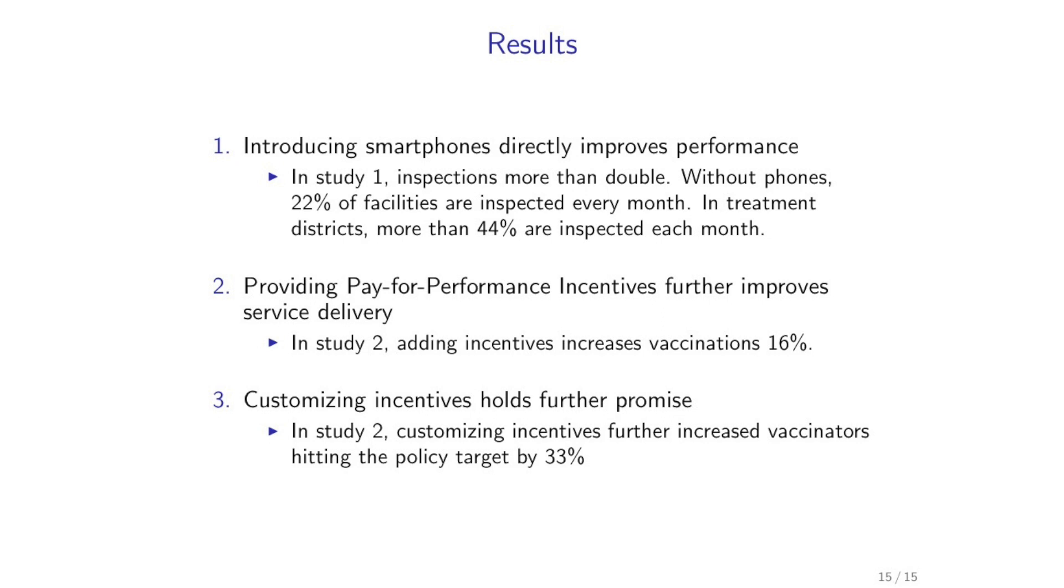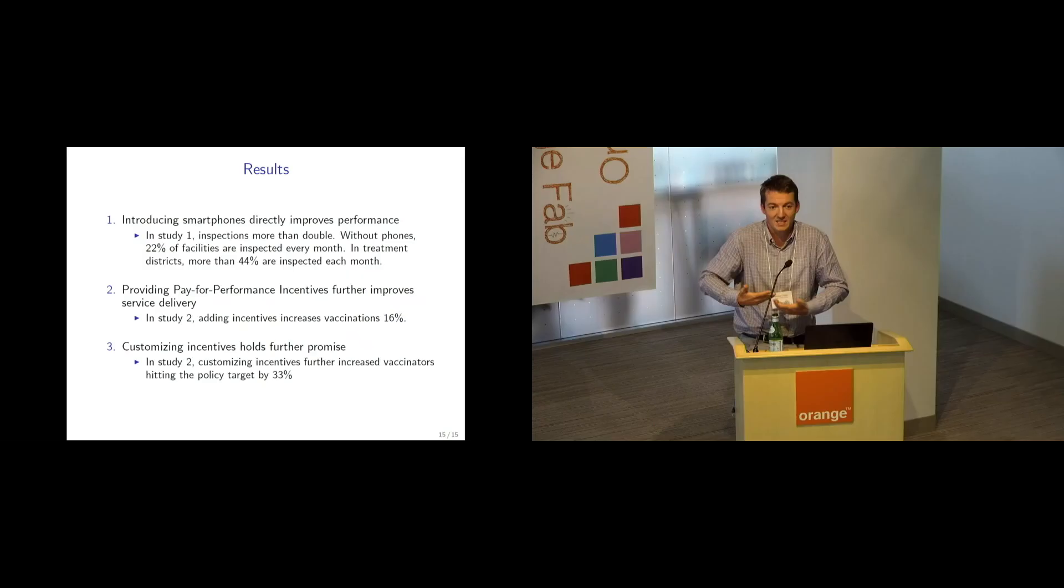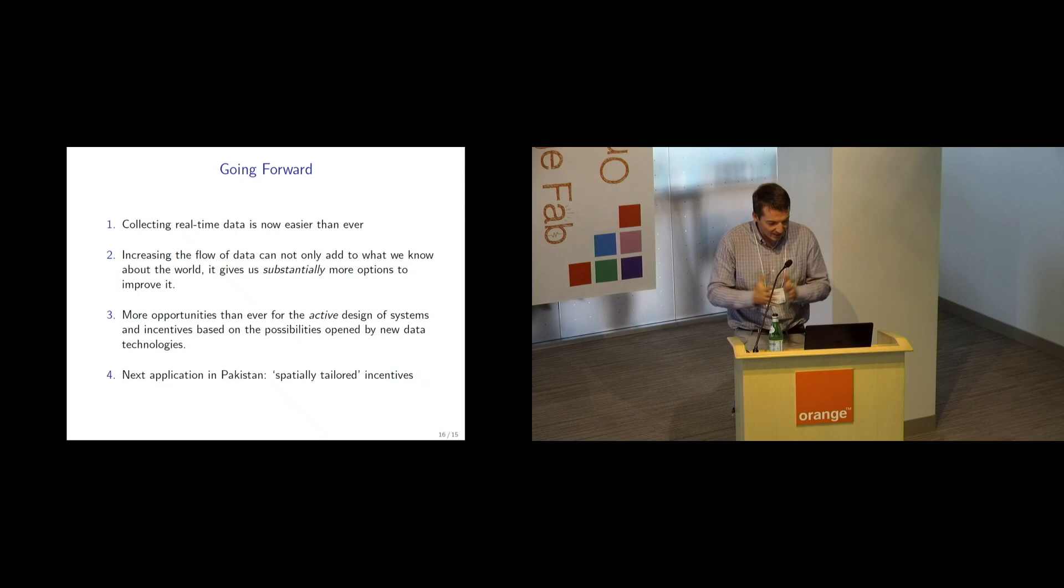And then customizing incentives, individualizing them across people—this is where to our mind there's money on the table. You get an additional bump in meeting your policy target of 33%, and that just comes from writing different contracts, not even increasing your fiscal outlay or spending more money.